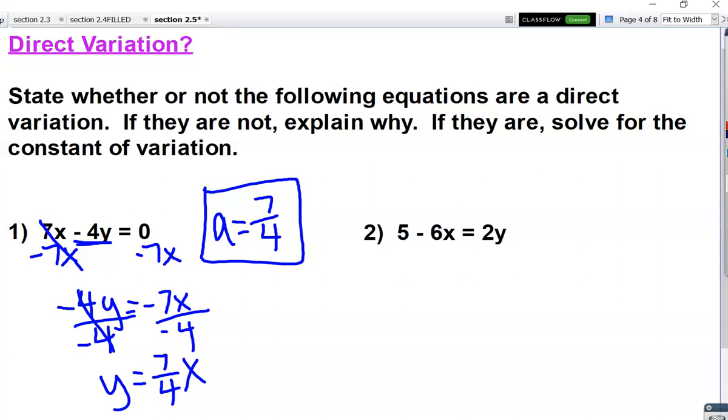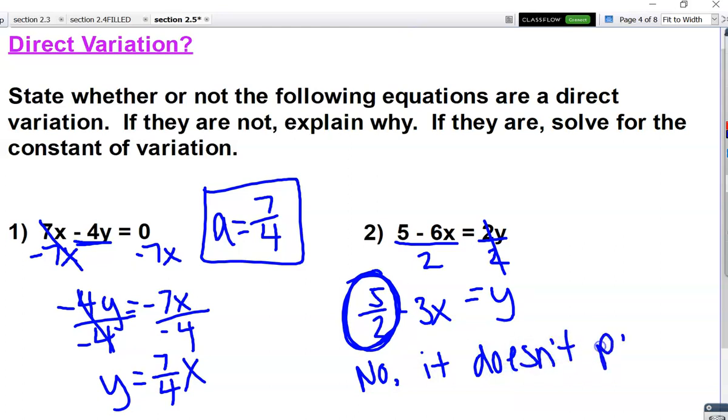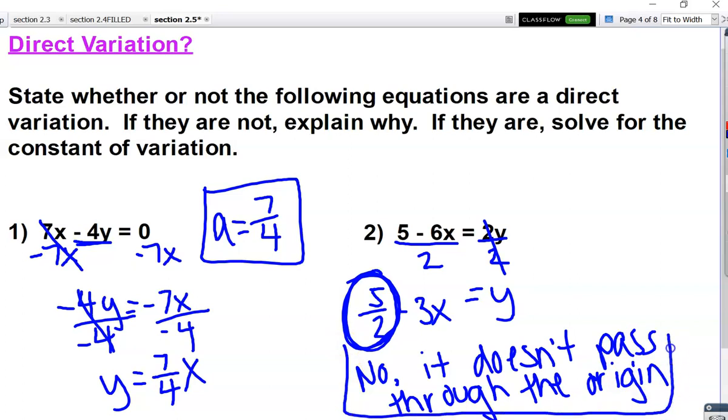For the second equation, we're still solving for y. We're going to divide by 2 on both sides. And you can see for this equation, this one is written in the form y equals mx plus b. I know it's completely flipped, but I can see what the y-intercept is for this equation. And that's 5 over 2. So for this example, it is not. Because it doesn't pass through the origin. So a shortcut. If you're looking at this and you're thinking, I see a pattern, just to kind of give you a nudge. If you have a constant in your equation, it's not a direct variation.